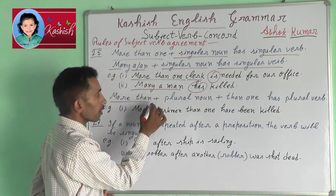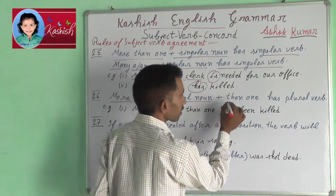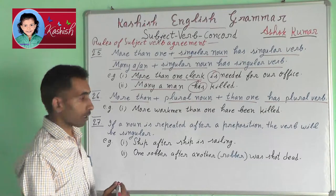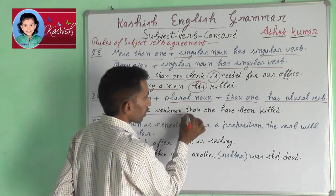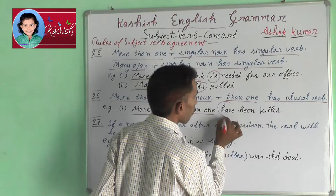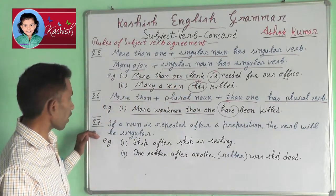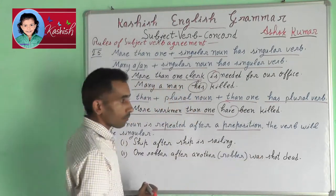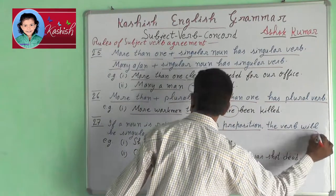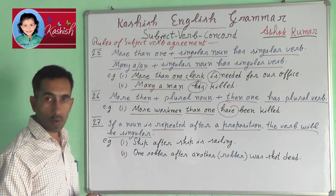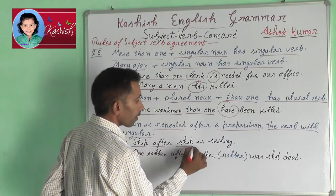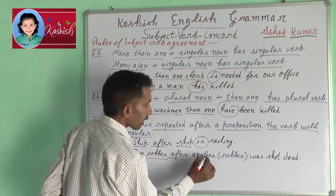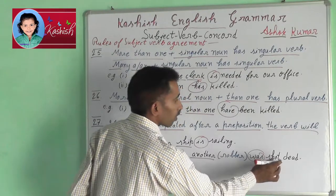Rule 26: More than plus plural noun plus than one has plural verb. For example: more workmen than one have been killed. Rule 27: If a noun is repeated after a preposition, the verb will be singular. For example: ship after ship is sailing. One rover after another was shot dead.